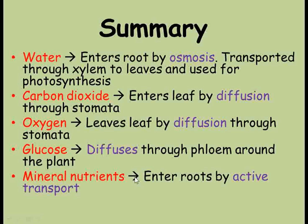To summarize: plants transport water into the roots by osmosis. It's then drawn up the xylem by transpiration to the leaves where it's needed for photosynthesis. The glucose produced here diffuses around the plant through phloem. Carbon dioxide diffuses into the leaf and oxygen diffuses out through the stomata on the underside of the leaf. Minerals such as nitrates and phosphates are moved into the roots by active transport, which, unlike diffusion and osmosis, requires energy to move a substance against its concentration gradient.